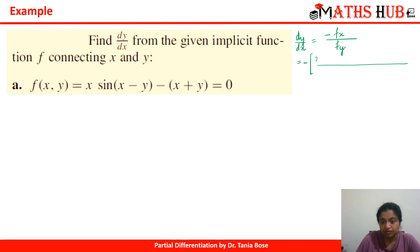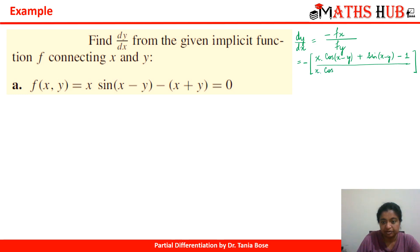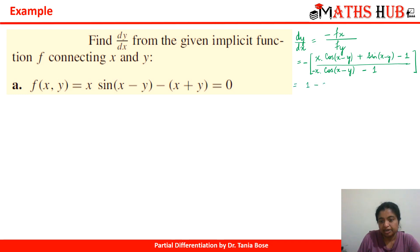For fx: keep x as it is, derivative of sin(x − y) is cos(x − y), then keep sin(x − y) as it is and derivative of x is 1, and finally derivative of −x is −1. For fy: x is constant, derivative of sin gives cos(x − y), and then derivative of (x − y) with respect to y is −1. Then we have minus the derivative of y, which is 1.